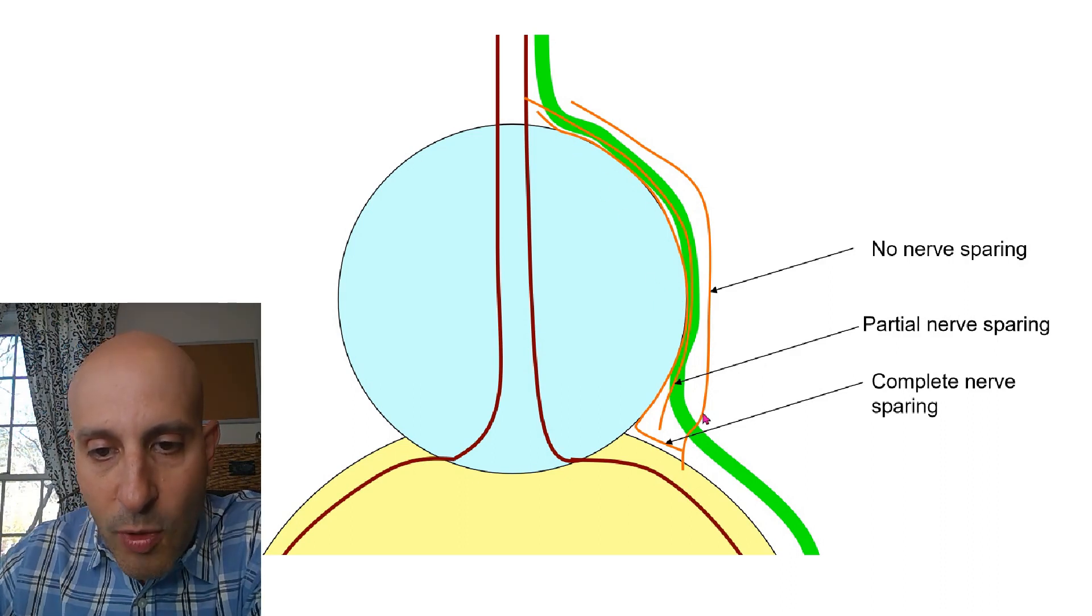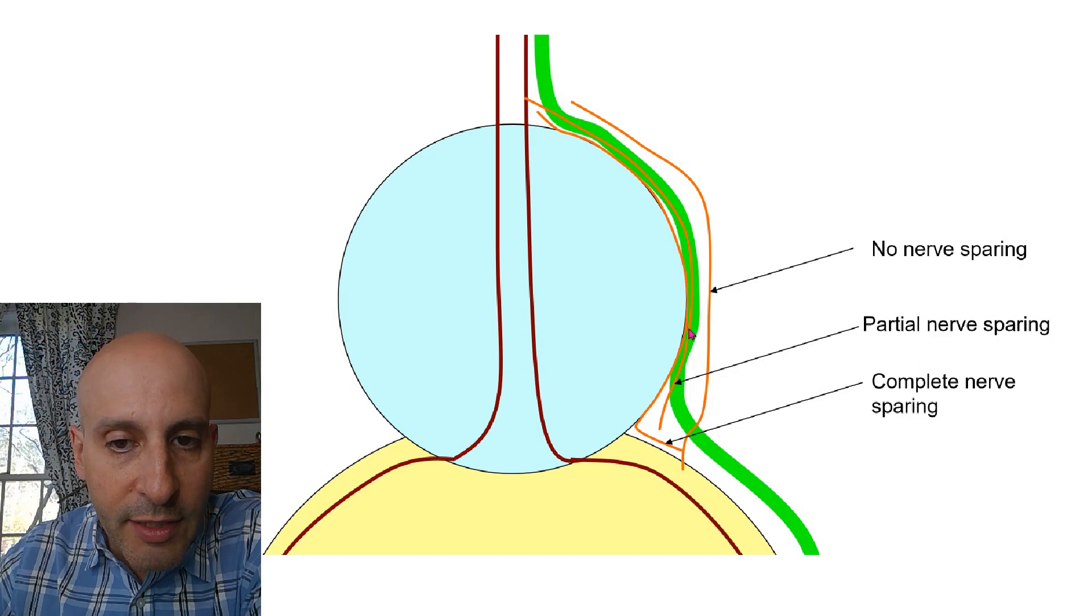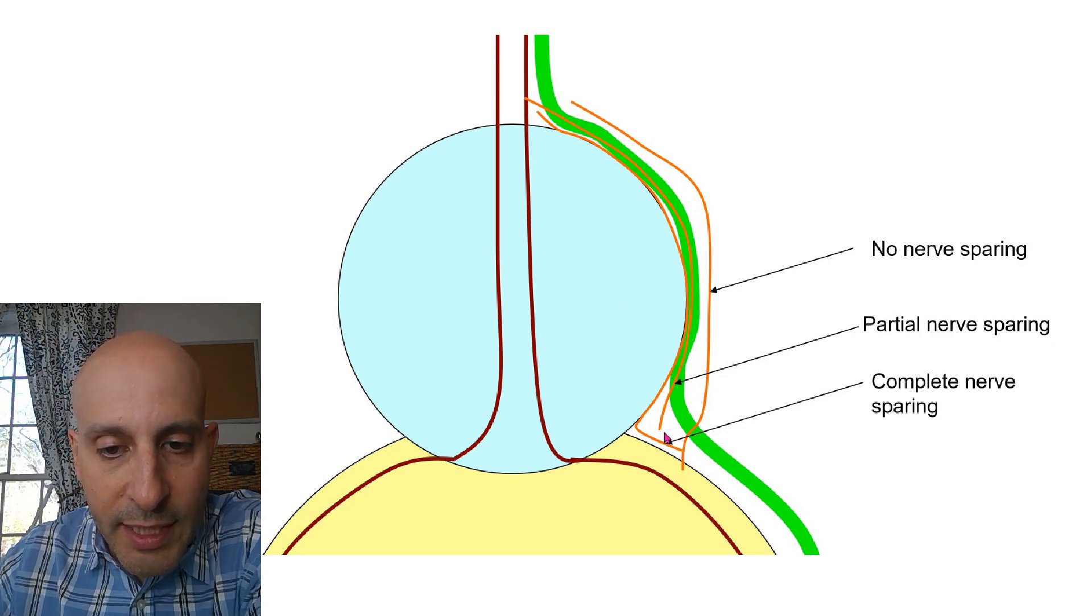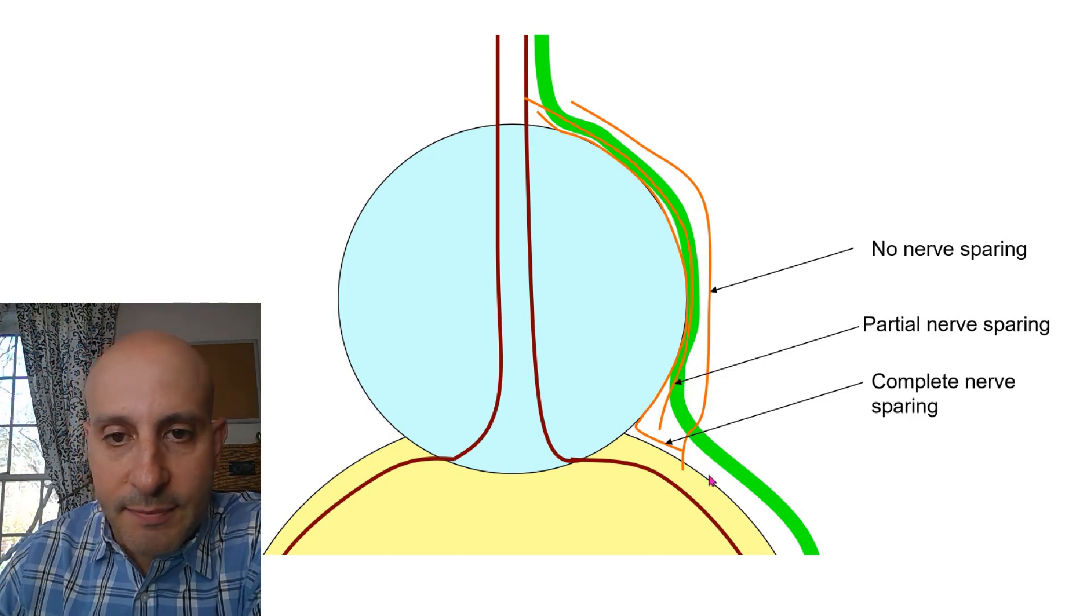If they take this wide path here, that's a non-nerve sparing plane. That green nerve will be taken out with the prostate and will be covering it. And then there's many shades of gray in between where the surgeon takes this, what we call partial nerve sparing plane.